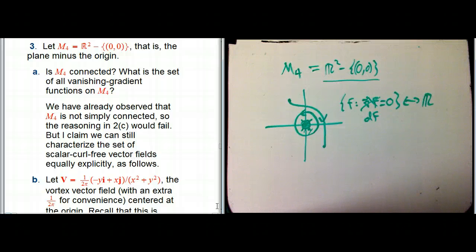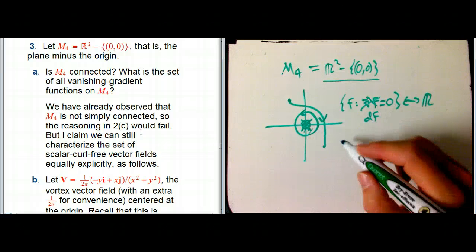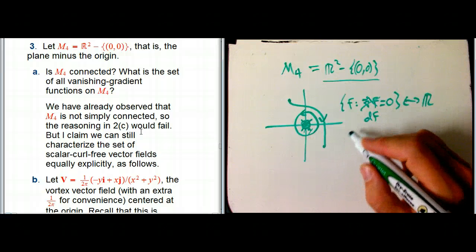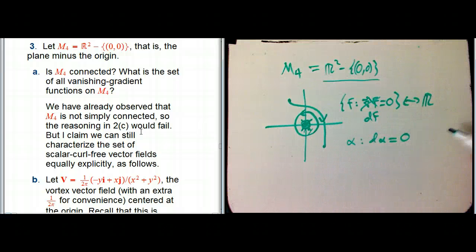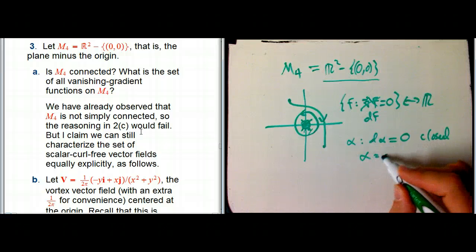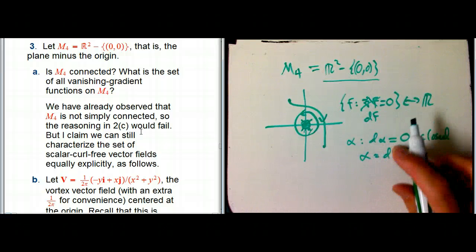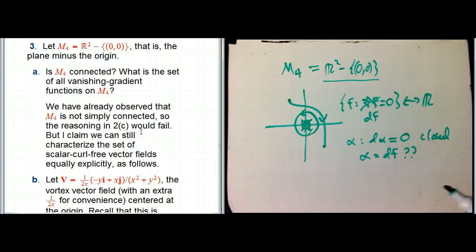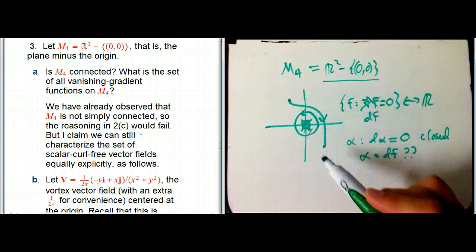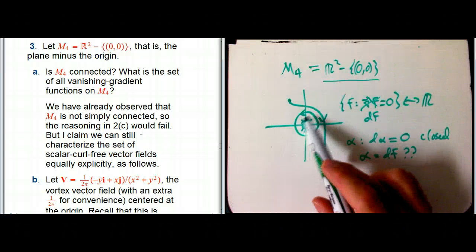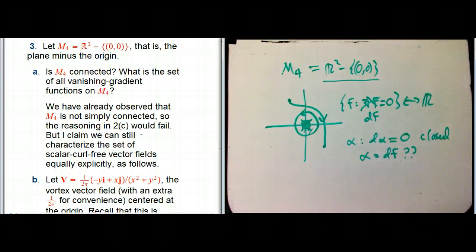This is something we had done in our class before. The idea from 2c was that any scalar curl-free vector field, or equivalently a closed one-form, our argument that it must be d of a function — that's likely to fail, because Green's Theorem can't be applied here since I can't build a region. It's not that Green's Theorem is false; it needs a region whose boundary is only that curve, and that's not going to work.